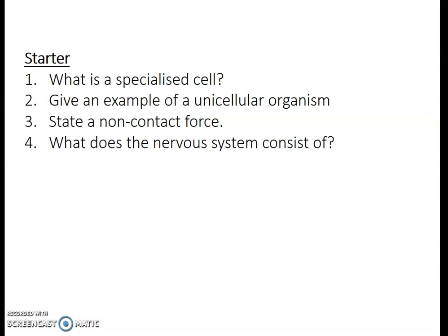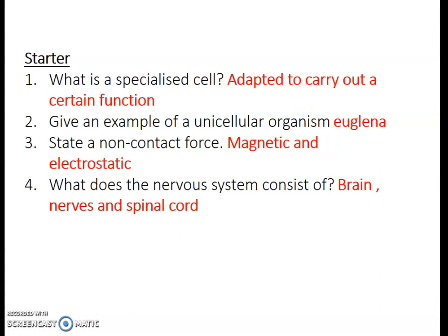The four questions are: what is a specialised cell; give an example of a unicellular organism; state a non-contact force; and what does the nervous system consist of? Pause the video and have a go at those four questions. The answers are: a specialised cell is one adapted to carry out a certain function; an example of a unicellular organism is a euglena; a non-contact force includes magnetic and electrostatic forces; and the nervous system consists of the brain, nerves and spinal cord.